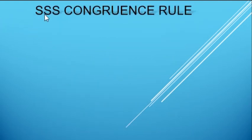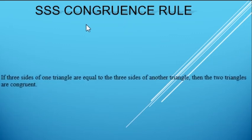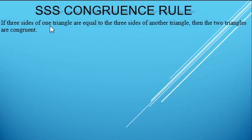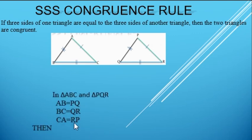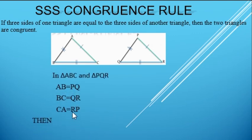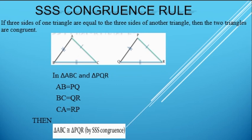Next, Side Side Side congruence rule. If 3 sides of 1 triangle are equal to the 3 sides of another triangle, then the 2 triangles are congruent. In this figure, triangle ABC and triangle PQR, we have AB equals to PQ, BC equals to QR, and CA equals to RP. Then we can say the 2 triangles are congruent by Side Side Side congruence rule.